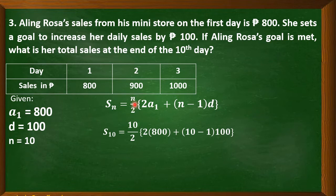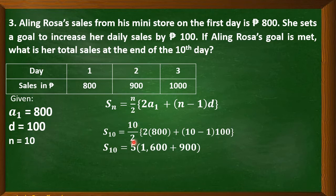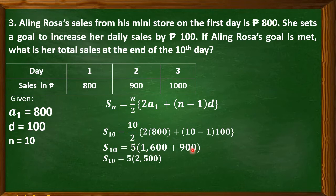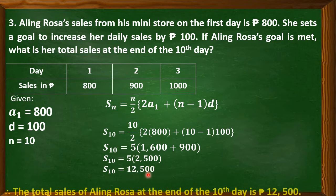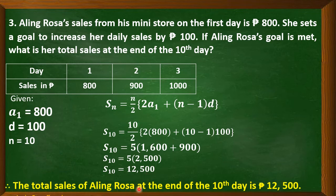Substitute. Our N is 10, so we have 10 divided by 2 times the quantity of 2 times A sub 1, which is 800, plus N minus 1 times D, which is 100. Simplify: 10 divided by 2 is 5. 2 times 800 is 1,600. 10 minus 1 is 9, and 9 times 100 is 900. Add 1,600 plus 900, which equals 2,500. Then multiply 5 by 2,500 — the product is 12,500. The total sales of Aling Rosa at the end of the 10th day is 12,500 pesos.